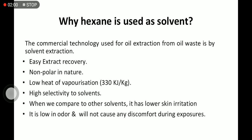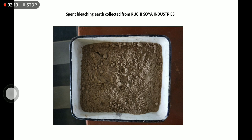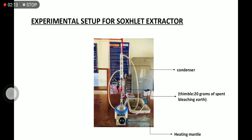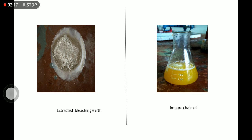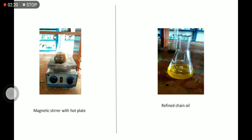Why is hexane used as a solvent? It allows easy recovery, is non-polar in nature, has low heat of vaporization, and high selectivity compared to other solvents, with lower toxicity. This is spent bleaching earth collected from the oil industry. This is the experimental setup of the Soxhlet extractor. This is the collected crude oil extracted from the spent bleaching earth using the Soxhlet extractor. From the magnetic stirrer, we have refined crude oil.